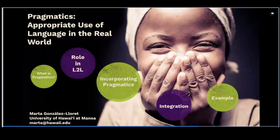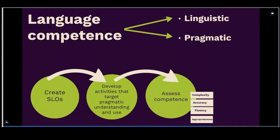How do we integrate this into language? The main point I want to make is that pragmatics is not something special and outside of language. Pragmatics is one of the essential components of language competence — we cannot have full language competence without pragmatics. We can have linguistic competence, but if we lack pragmatic competence, we don't have language competence. So we should treat pragmatics as we treat any other language component. We should create SLOs to target it, develop activities to target pragmatics and how they work, and we should assess the competence of language — not just language complexity, accuracy, and fluency, but also appropriateness.